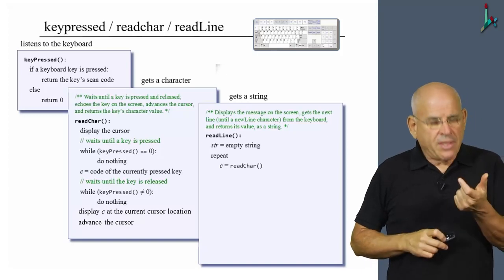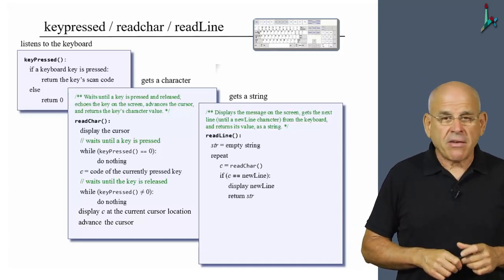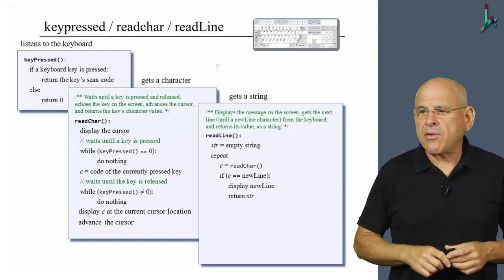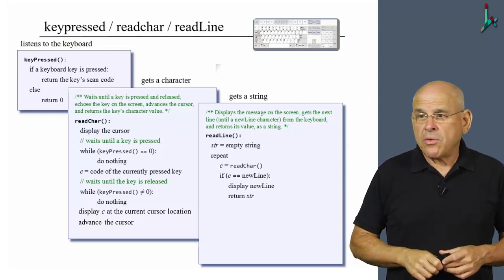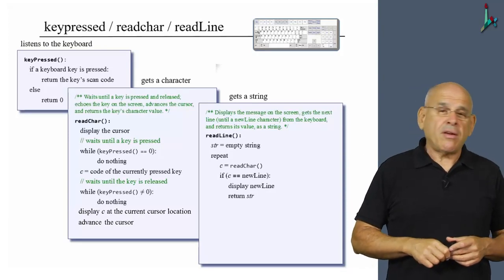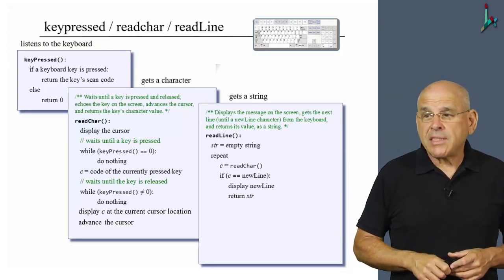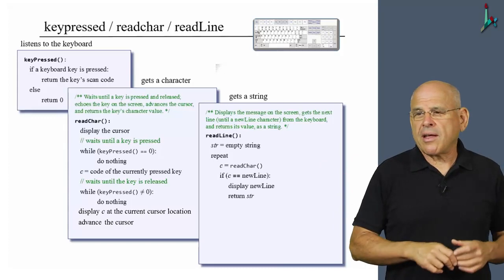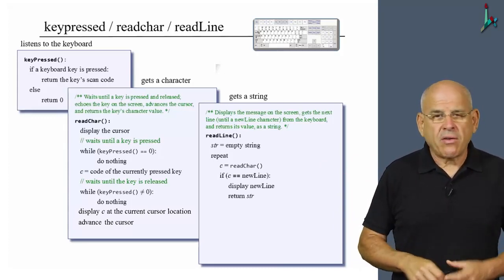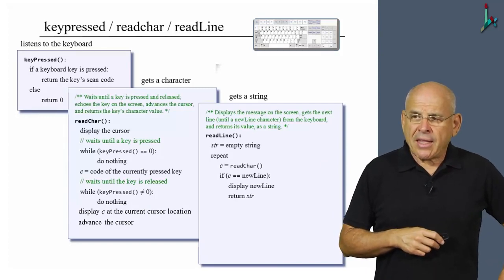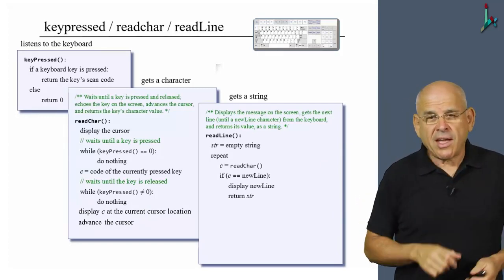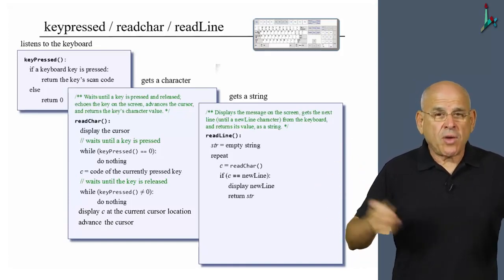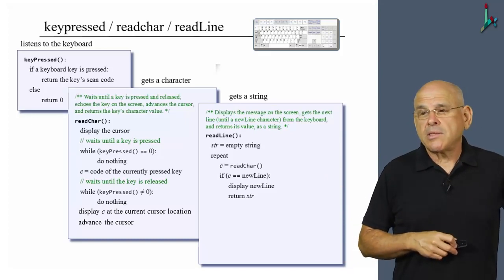If the character is newline, which is the ASCII code of the enter key, or whatever is this key on your keyboard, then we want to display newline and return the string. Displaying newline is not our business. This is something which is done by the output class. So we have to call the output method that displays a newline. You can check the output API how to do it. And this will cause the cursor to go to the next line. And by then, we know that the string has been entered. So we simply return it. That's the end of the process.